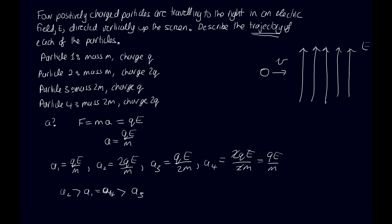Okay, so if we want to draw trajectories for these, then they're going to be accelerated upwards because they're positive particles. So they move in the same direction as the electric field. So particle 2 is going to bend the most when it gets into the field. So it's going to bend up like this.